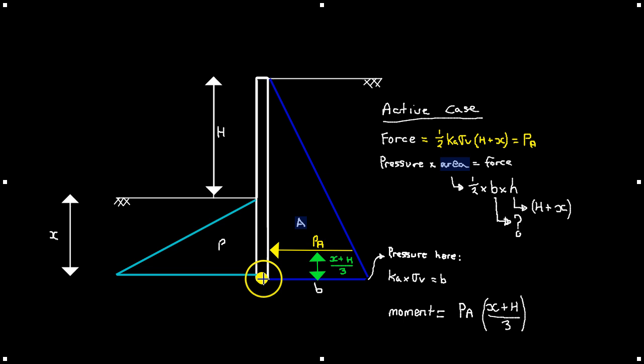We know that our active force acts one third from the point of rotation here. So to work out our moment due to the active case, it would be simply our Pa, our active force that we calculated earlier, times by x plus h divided by 3. So that's the active case sorted.